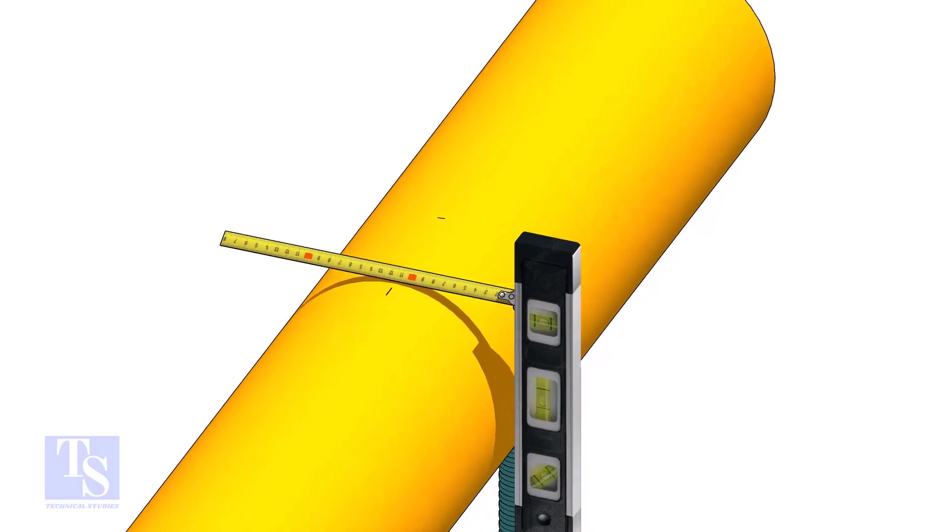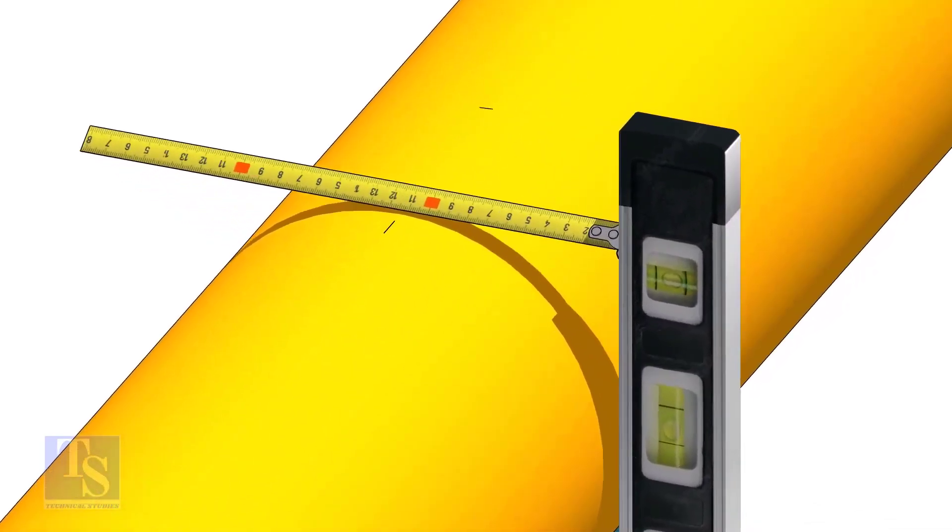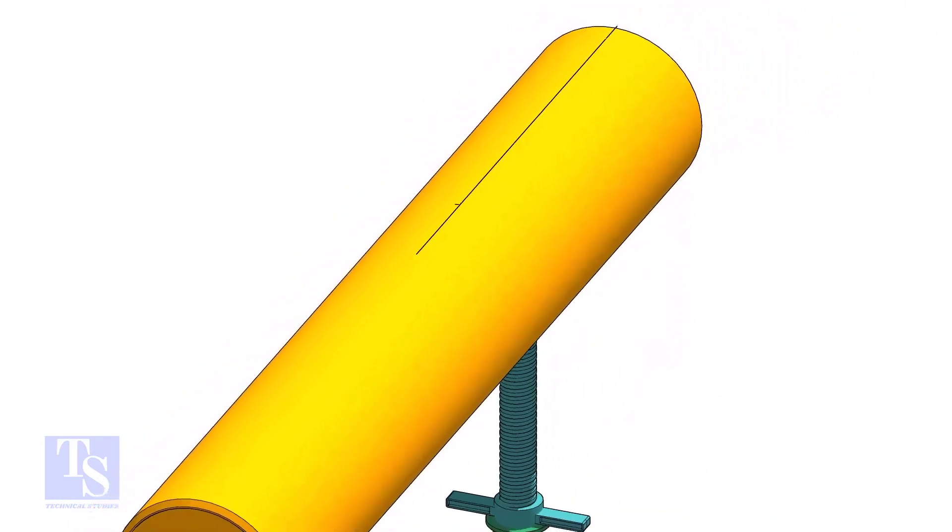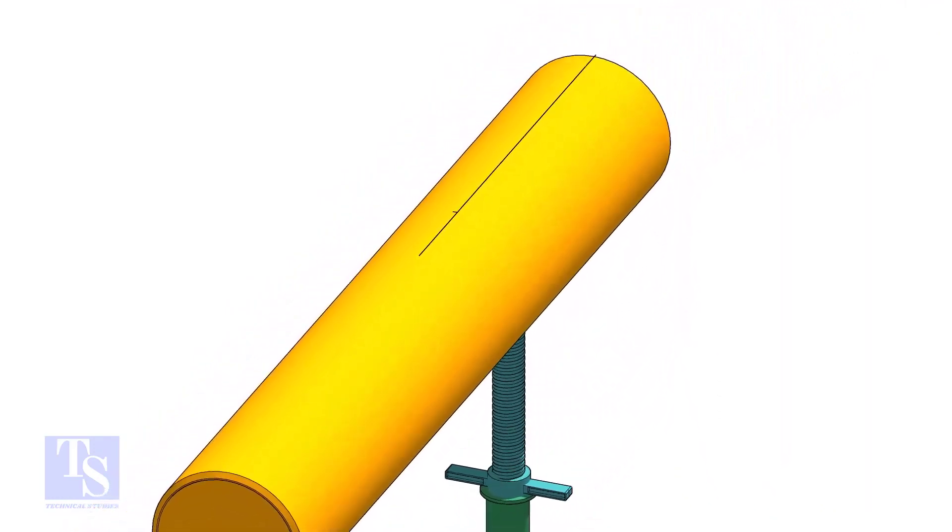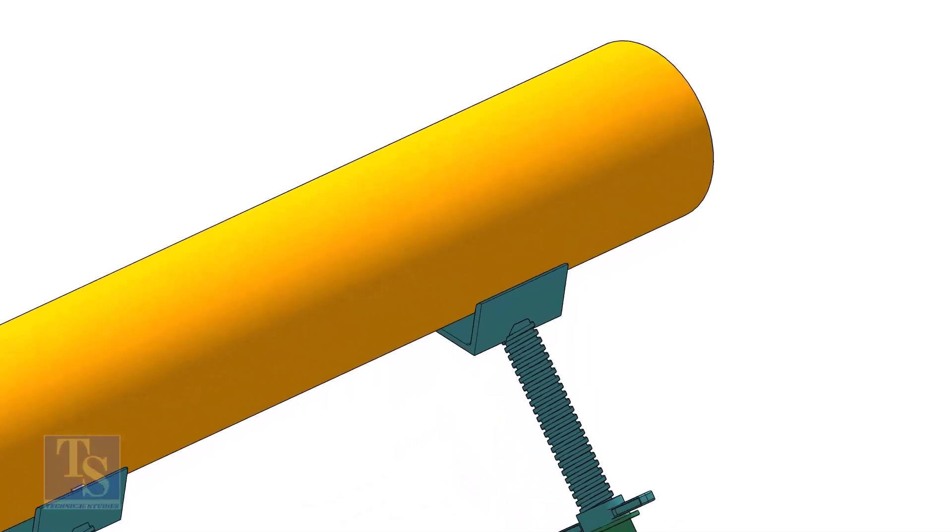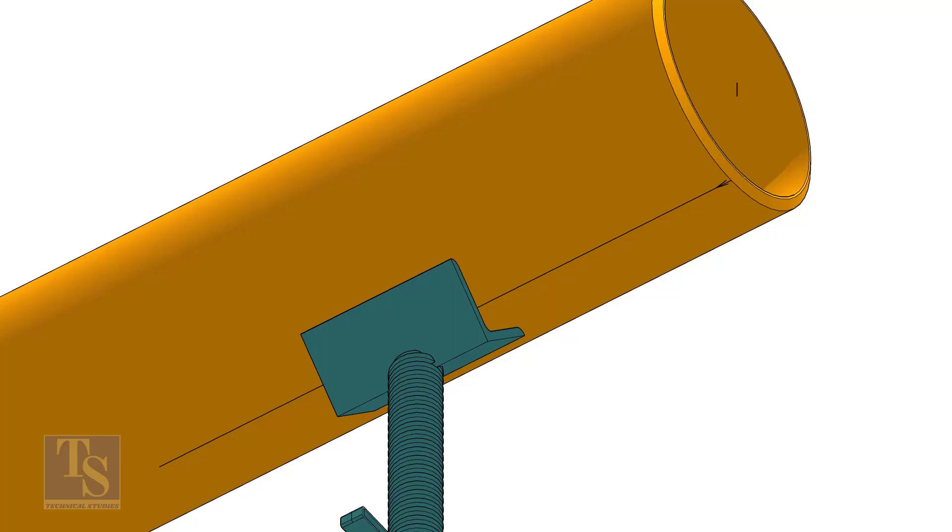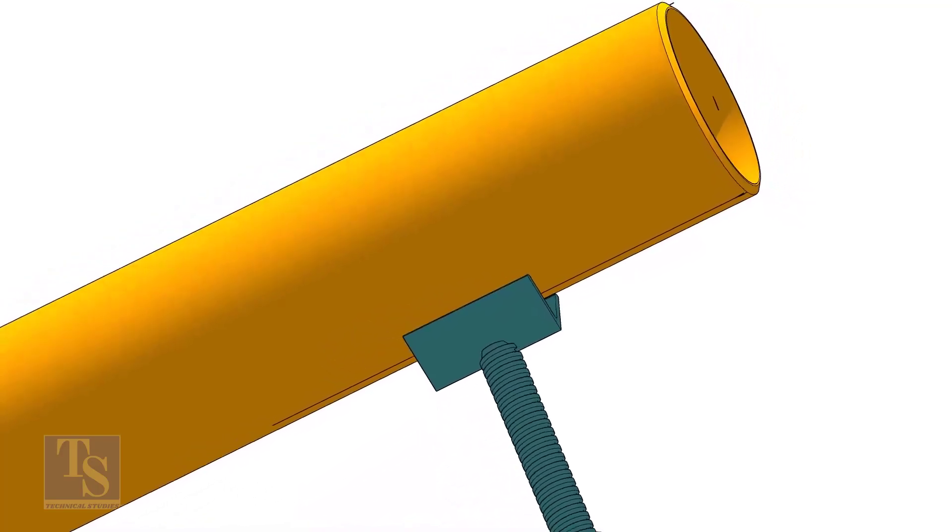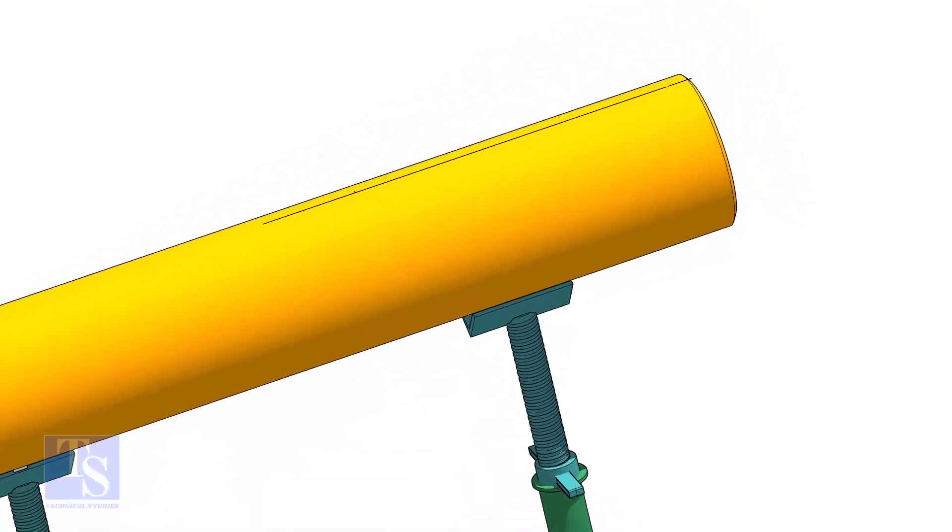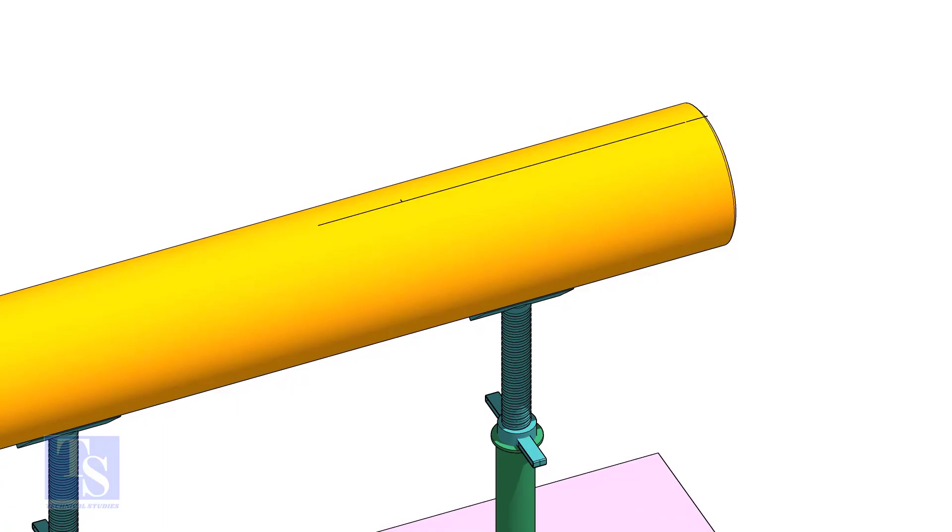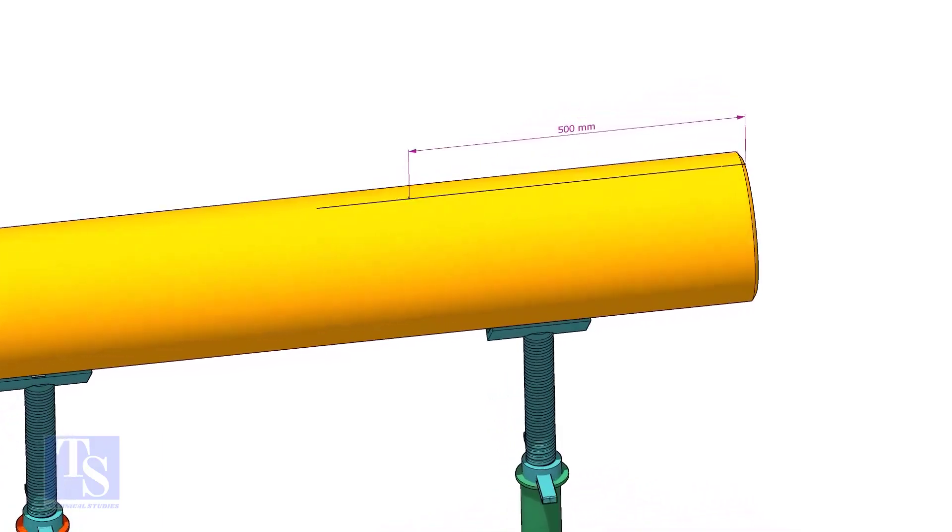Mark the center of the other end where you want the center line to be extended. Mark the center of the branch connection.